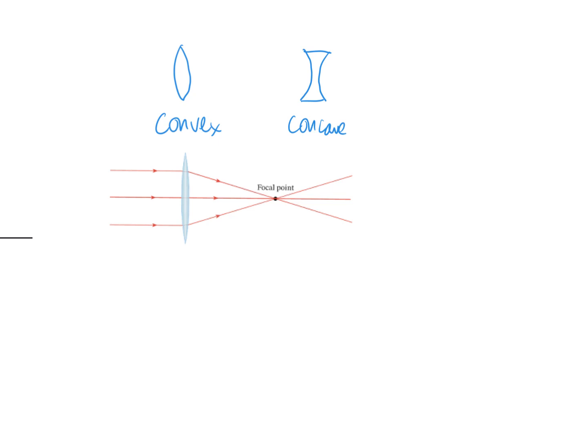Convex lens is also called a converging lens because it converges the rays of light. If they're coming in parallel, they all get focused at the focal point. And the focal length is just this distance here, which you can measure or you might be given.